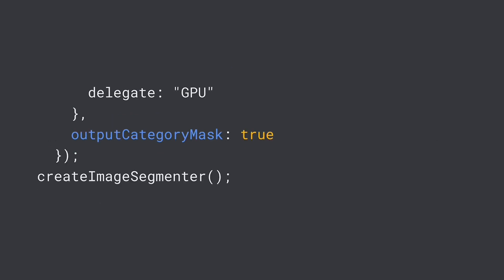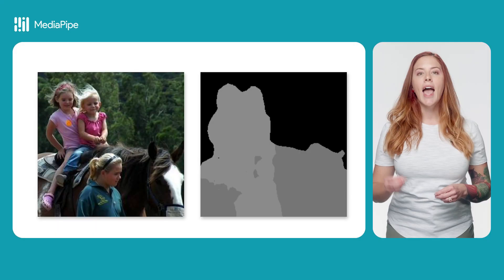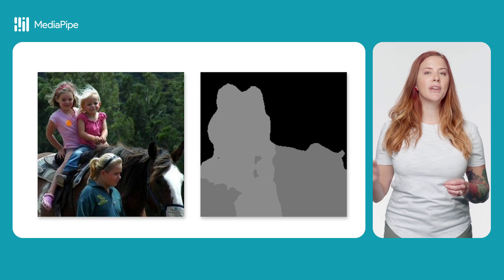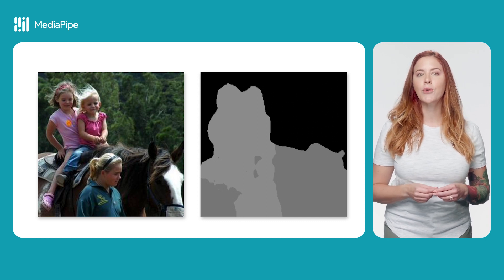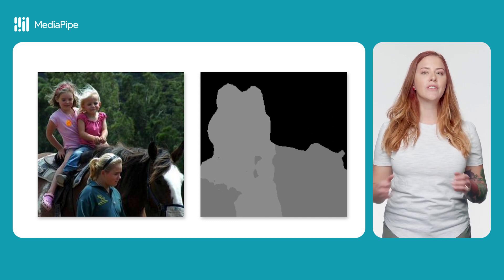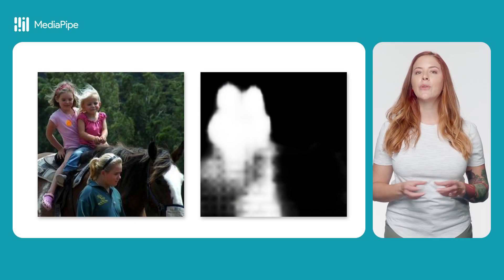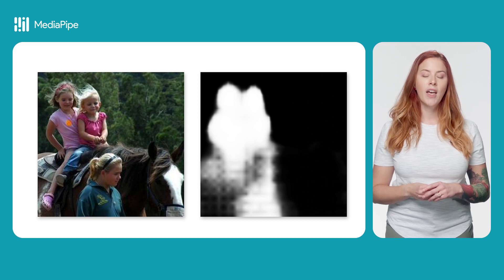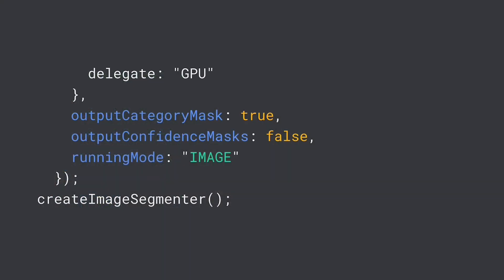You can also provide optional parameters. OutputCategoryMask provides an image mask where each pixel is colored the best-fit category at that pixel according to the segmentation. OutputConfidenceMask provides a list of image masks, one for each category, where each pixel's value tells you how well that pixel corresponds to that particular category. Running mode is either image or video, depending on whether you segment images or videos — image is the default value.